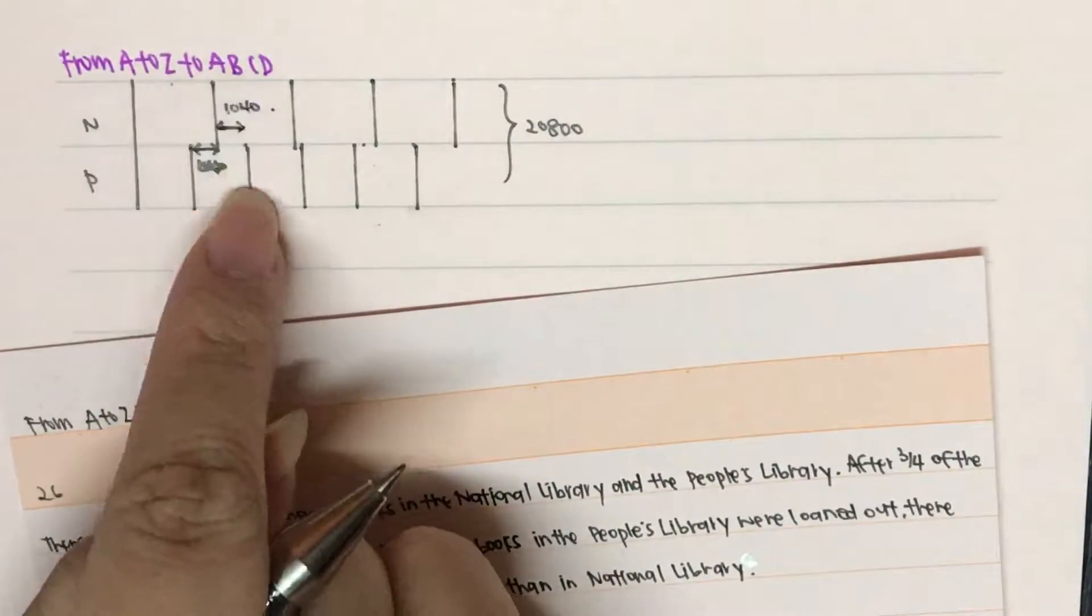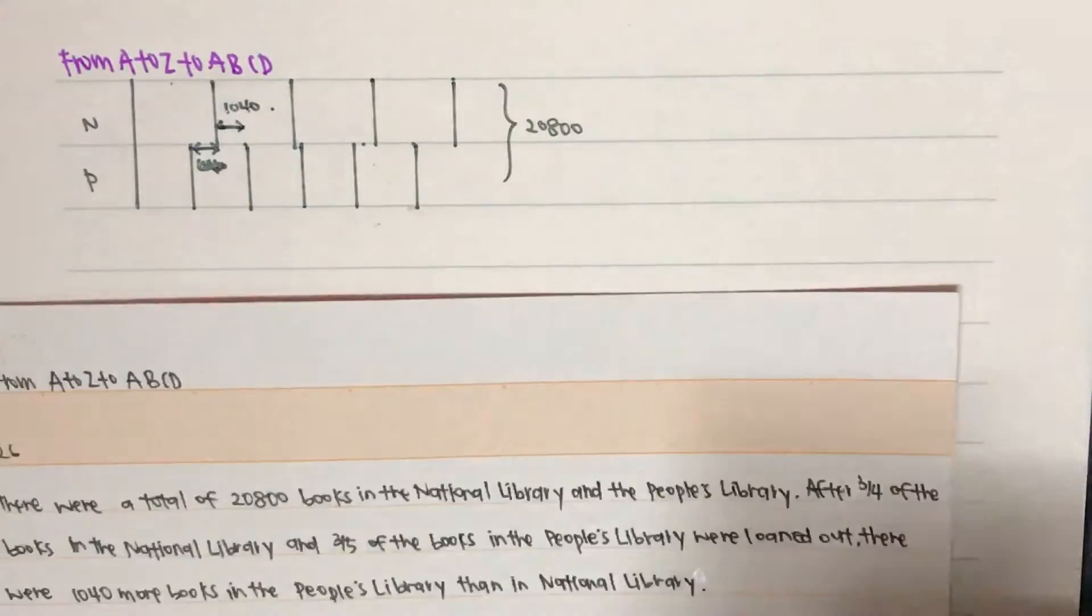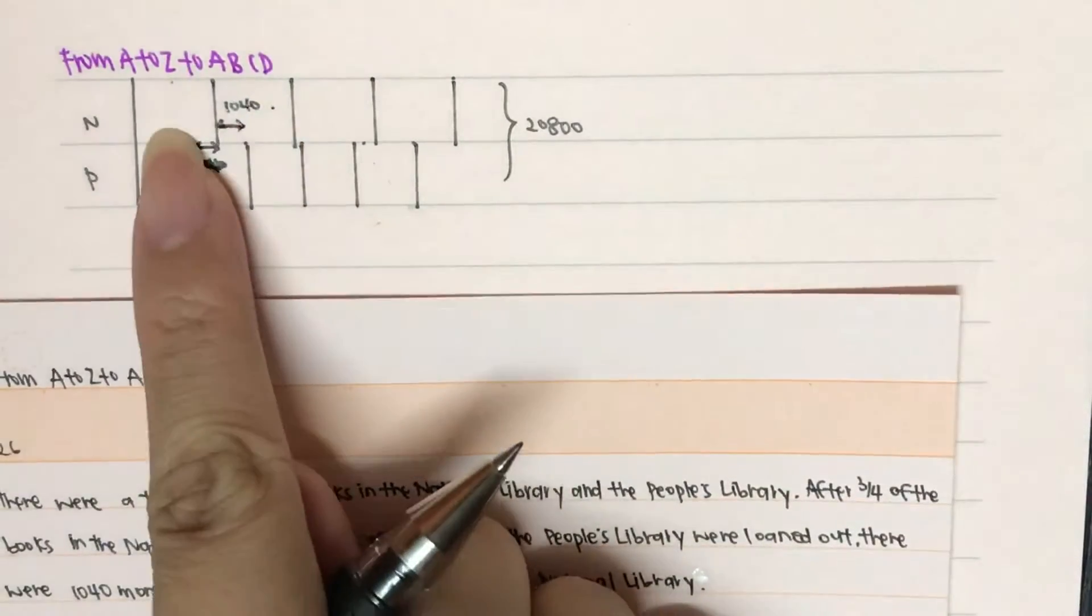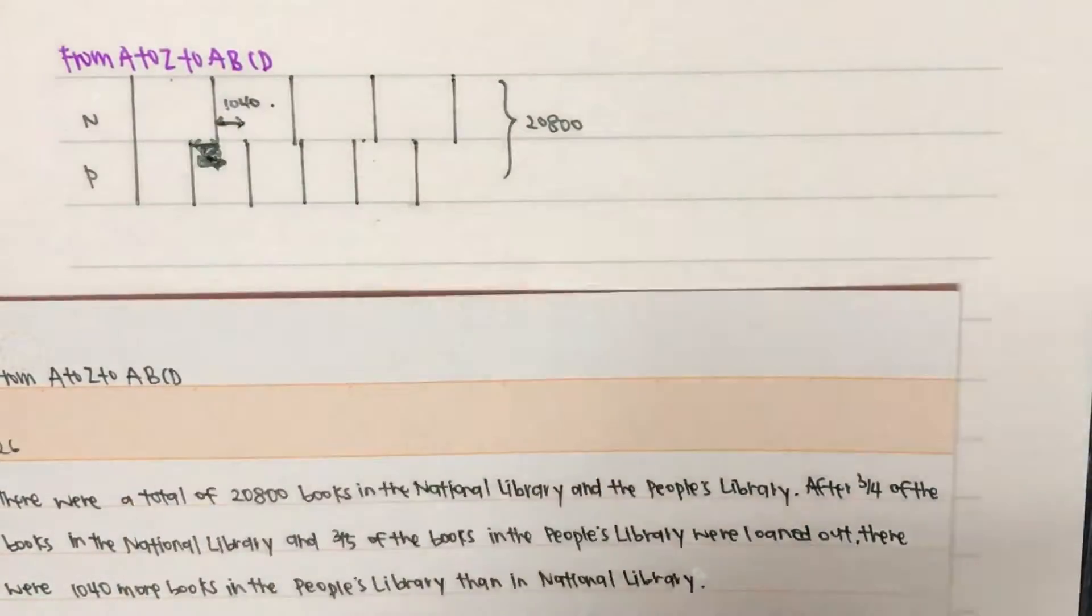Then, two-fifths is actually 1,040 more than one-quarter. So this is something we need to take note of. Over here, just ignore.